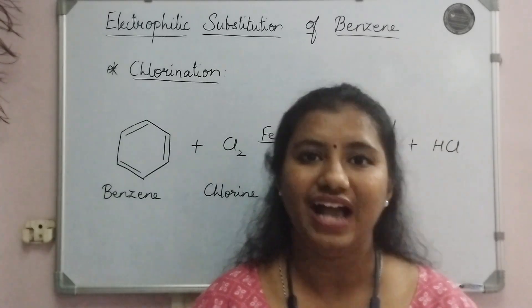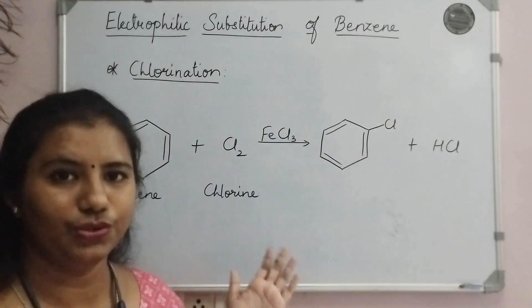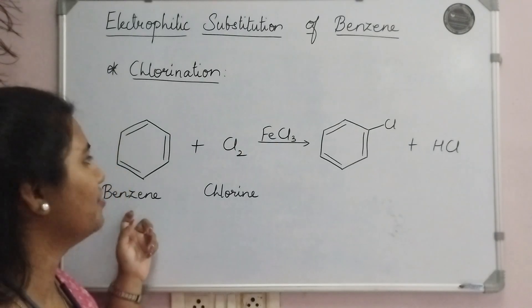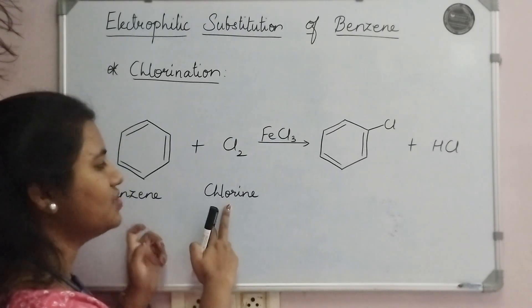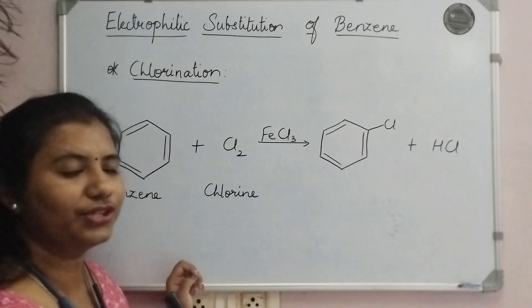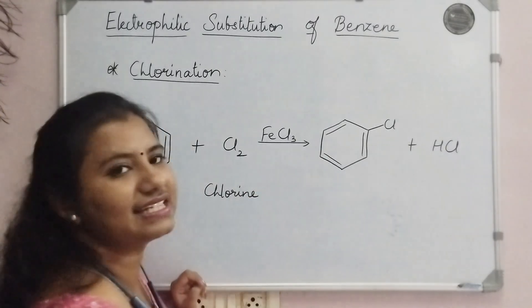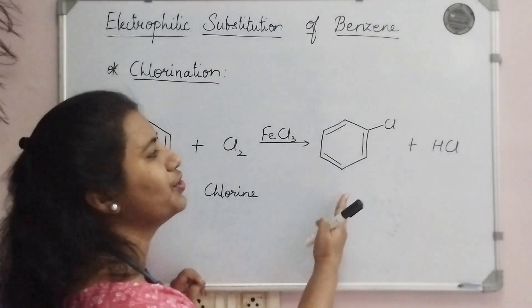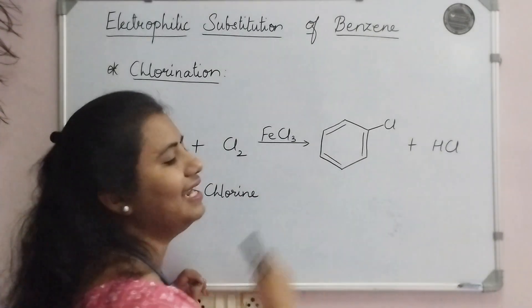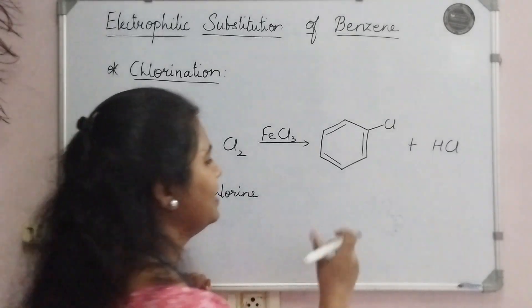As you can see, we have the one-step reaction for chlorination of benzene, where we have the benzene molecule. On this, we are going to react the chlorine molecule in the presence of a catalyst, that is ferric chloride (FeCl₃). And we are going to get chlorobenzene and hydrogen chloride (HCl) as the byproduct.